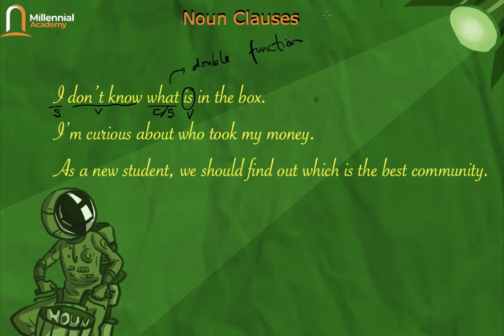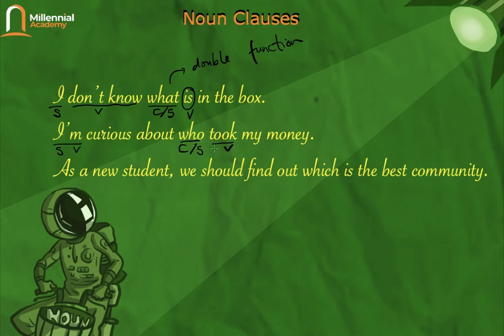The same thing applies to the second sentence: 'I'm curious about who took my money.' Here, 'I'm' is our subject and verb — I'm curious. Then there is the connector 'who,' and immediately after comes the verb 'took.' Where is the subject? The subject is 'who.' So I'm curious about who took my money.